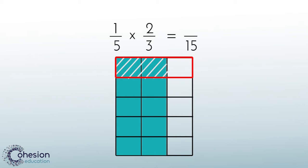Next, to find our numerator, we will count up the number of pieces that have been shaded twice or where the shading overlaps. We should count up two pieces. This means our answer is two-fifteenths.